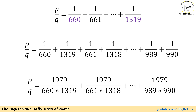If we do this and simplify each pair, for the first pair we get 1319 plus 660 over 660 times 1319. We then replace 1319 plus 660 with 1979. Taking the same approach for the second pair, the third pair, and so on, all the way through, the last pair gives us 1979 over 989 times 990.